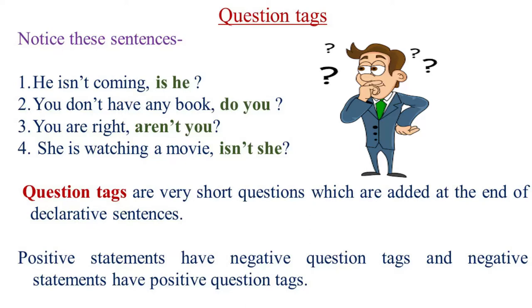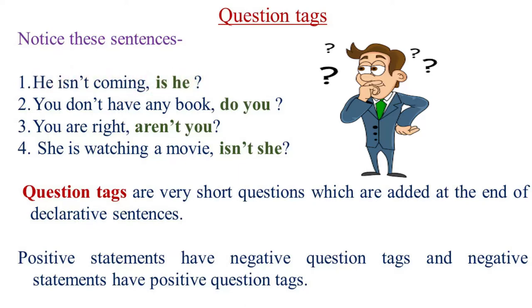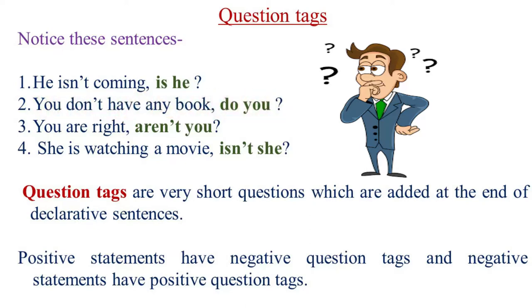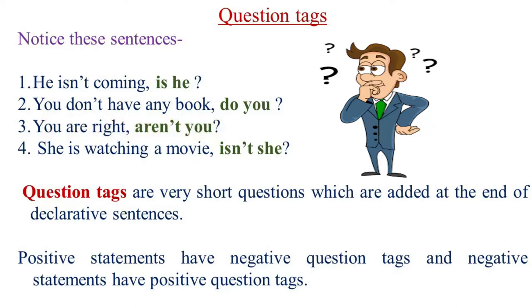Let us see the following examples. Please repeat after me. He isn't coming. Is he? You don't have any book. Do you? You are right. Aren't you? She is watching a movie. Isn't she?